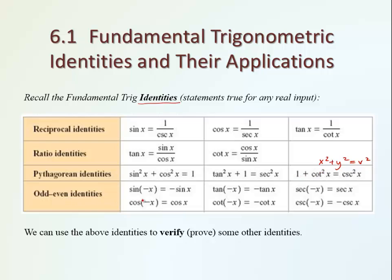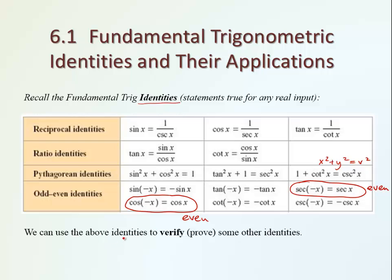Finally, we have a list of identities reflecting symmetries of specific functions. Except for cosine and secant, which is the reciprocal of cosine — these two functions are even — the rest of the trig functions are odd. So we can pull the minus outside of the function. That's the main core of identities we're going to use to prove some other identities.